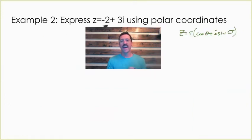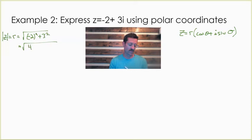On our next problem, we have both a real component and an imaginary component. To find our r value, that's the same thing as the modulus. We are going to take the square root of that real component squared plus that imaginary component squared, or in this case, negative two squared plus three squared. That's going to be the square root of 13.